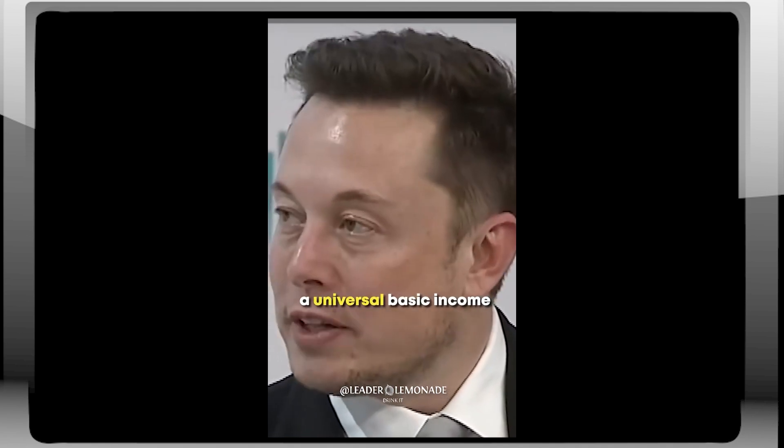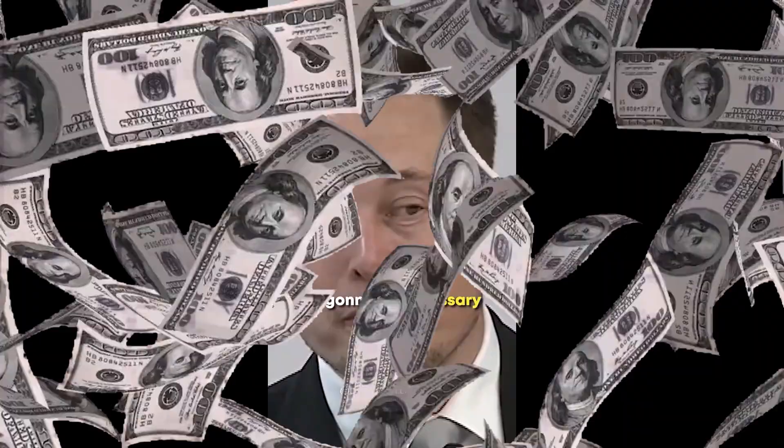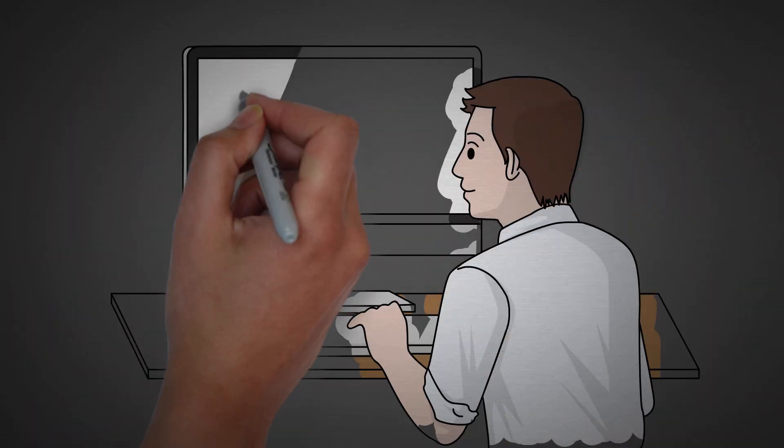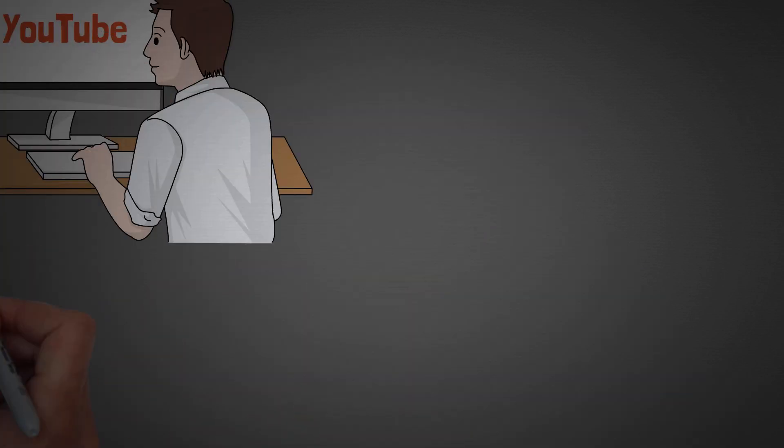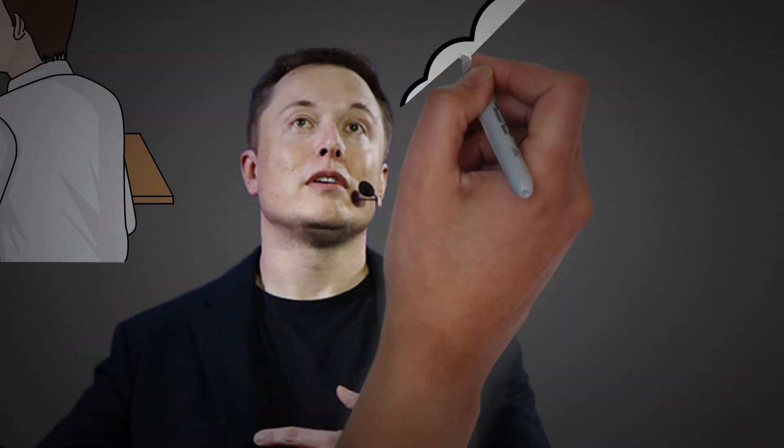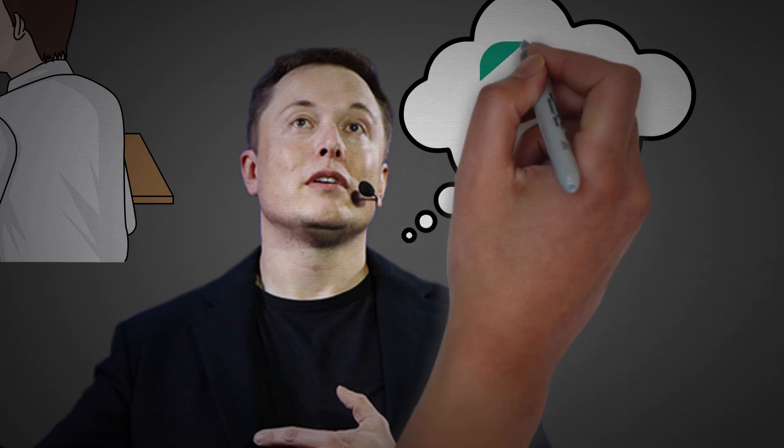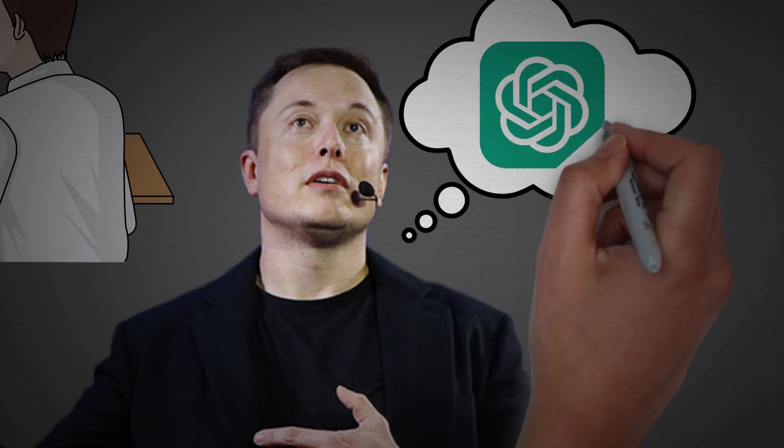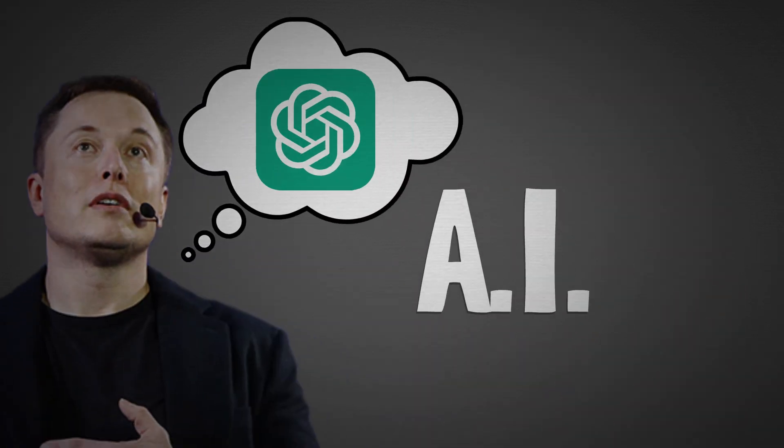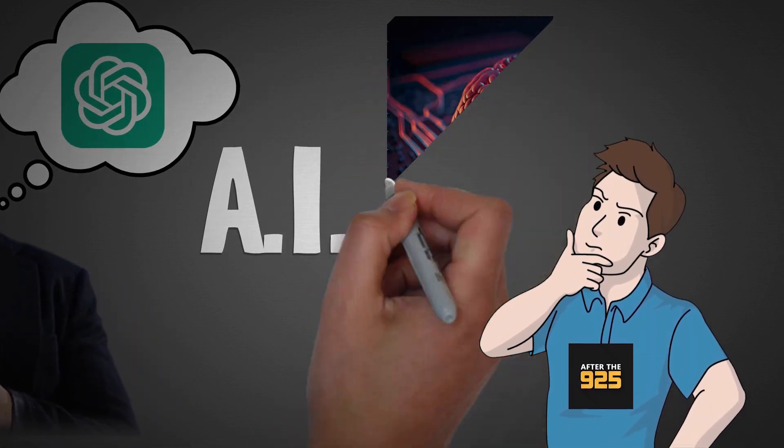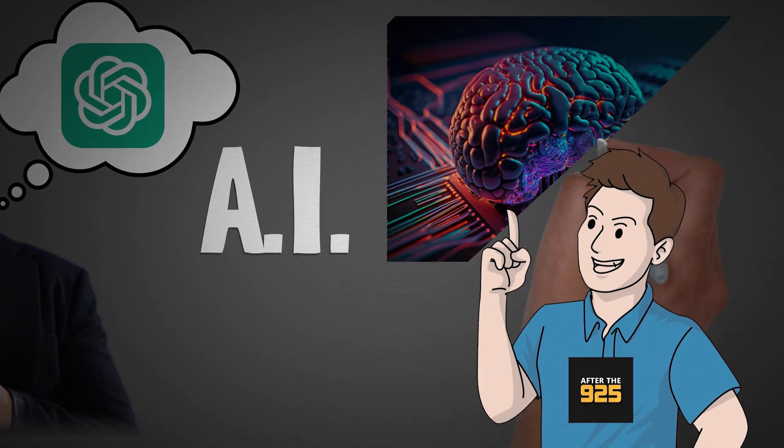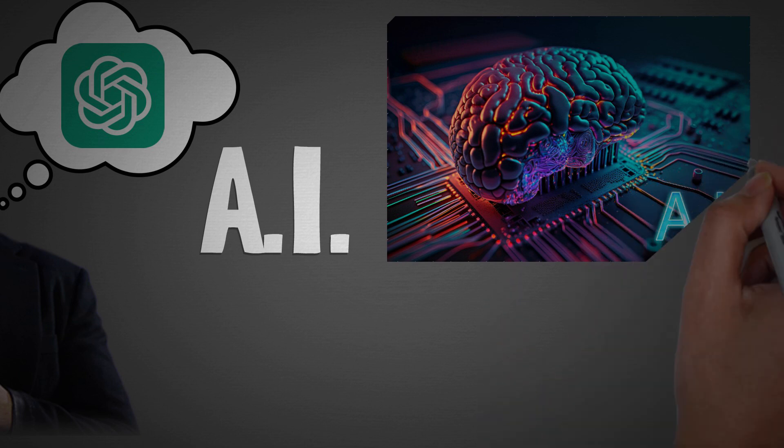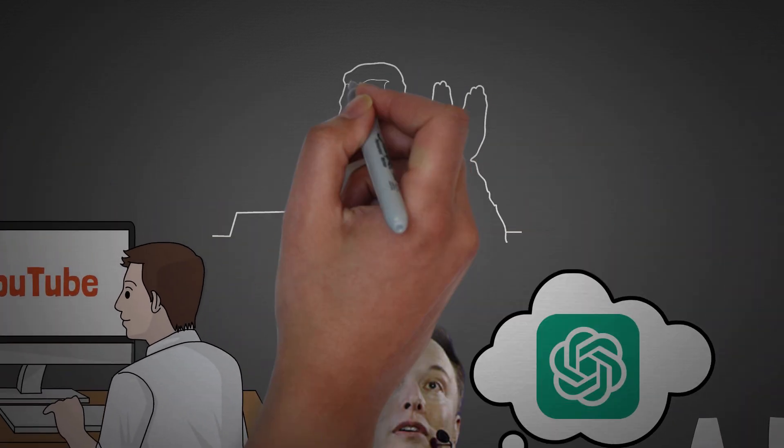I think some kind of universal basic income is going to be necessary. Imagine a world where your daily tasks, complex decisions, and creative expressions are effortlessly enhanced by an intelligence far beyond human capabilities. A world where the boundaries between human thought and artificial intelligence are blurred. You know what's at the heart of this transformation? It's the groundbreaking evolution of AI, spearheaded by visionaries like Elon Musk.